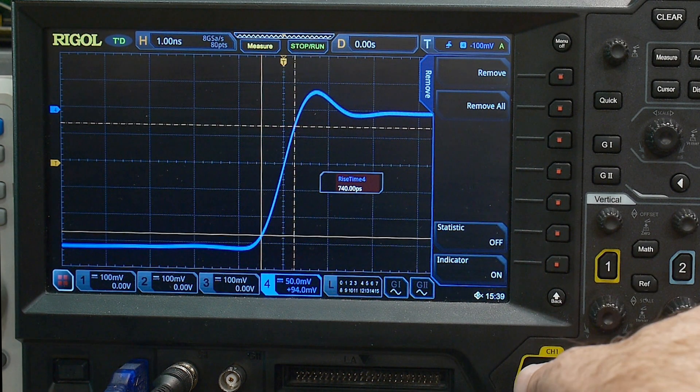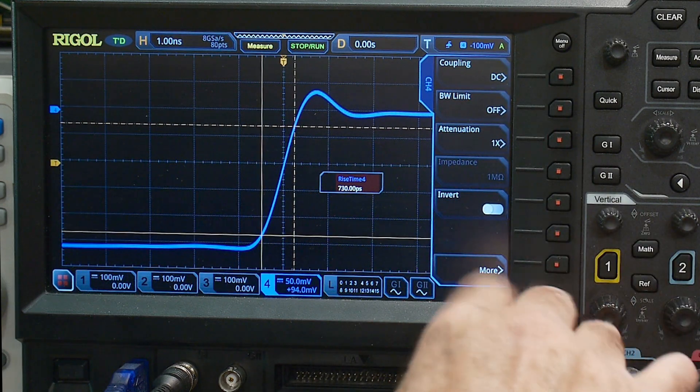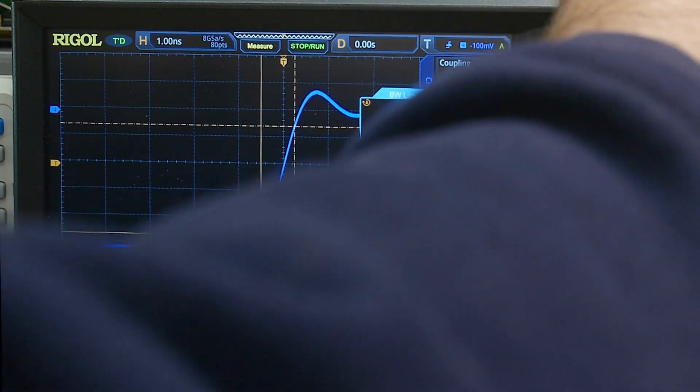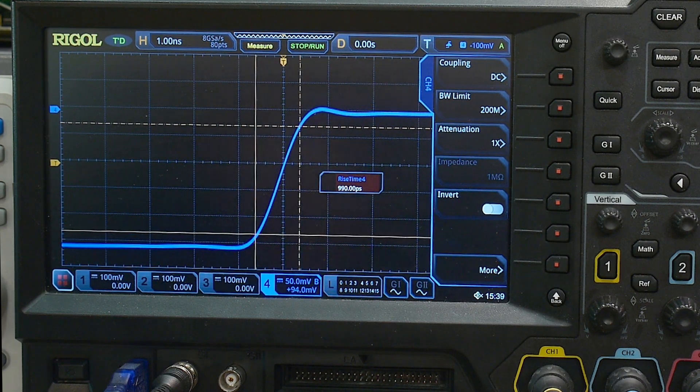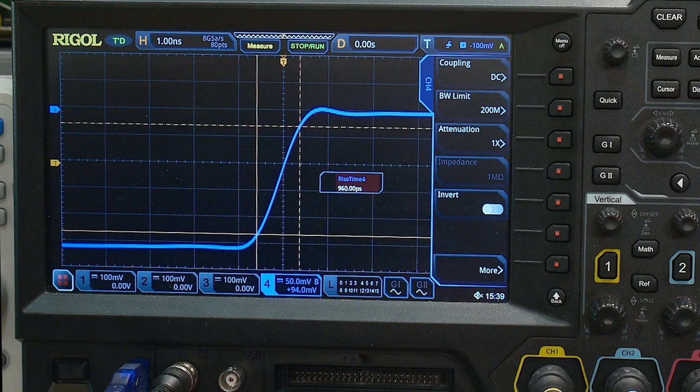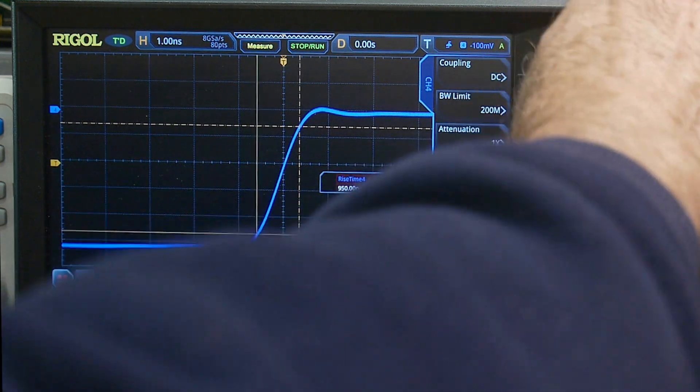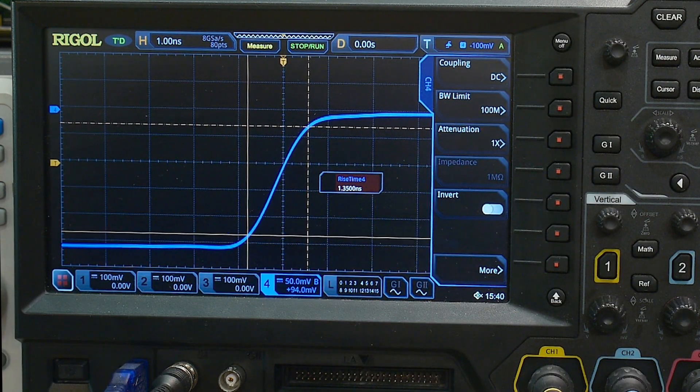One way to show that is if I go to channel 4, we can actually set bandwidth limits. We could say, instead of being a 350 megahertz scope, pretend that you're a 200 megahertz scope. It puts a filter in there and limits the bandwidth to 200 megahertz and we're getting about 950 picoseconds now. We can say pretend you're a 100 megahertz oscilloscope. Now it's 1.3 nanoseconds.